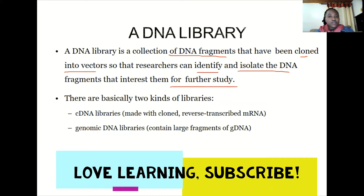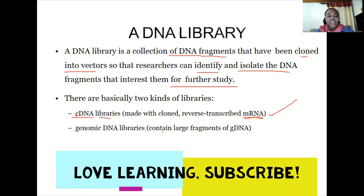We have two forms of libraries. The first is the cDNA library, also called the complementary DNA library, which is made with cloned reverse-transcribed mRNA — so mRNA is the starting molecule used to create a complementary DNA strand. The second is the genomic DNA library, which contains larger fragments of the genome, that is the entirety of the organism's genetic material.